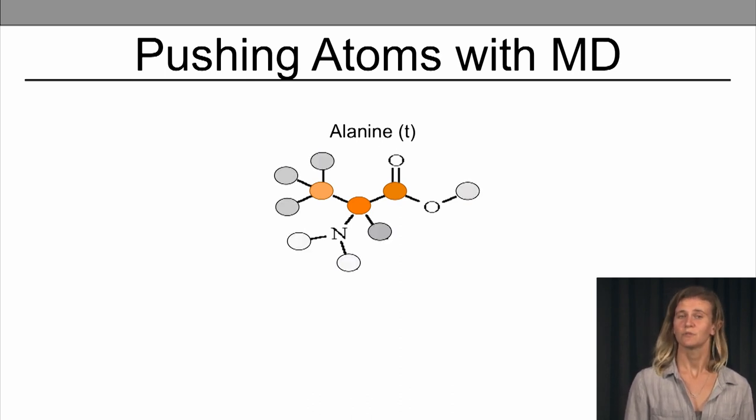There's other hydrogen types, which are shown here in different shades of grey, one nitrogen, and two oxygen types. And based on the types of atoms that are within this amino acid, we can push the atoms through time using molecular dynamics.